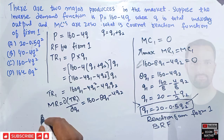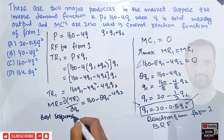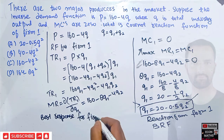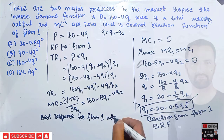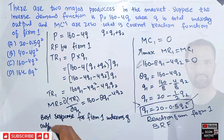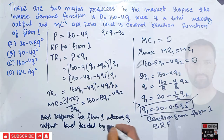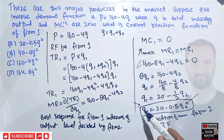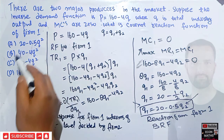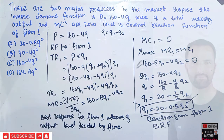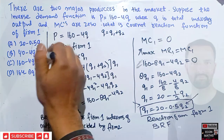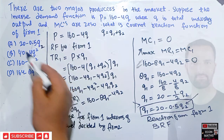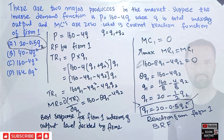In other words, this is the best response for Firm 1 in terms of the output level decided by Firm 2. Now checking the answer against the given options — the correct answer should be q1 = 20 − 0.5q2. One of the options appears to use q-squared instead of q subscript 2; if it means q subscript 2, then that option is correct. I hope I made myself clear in this video. Thank you.